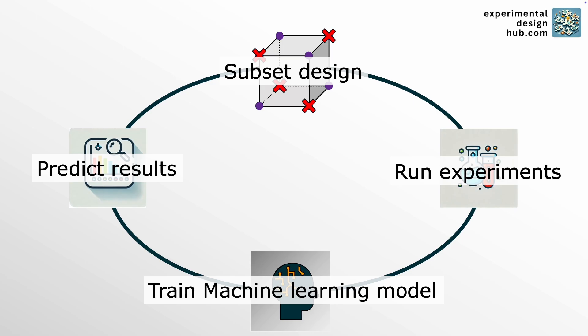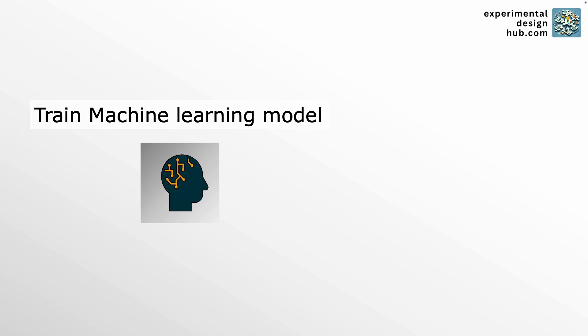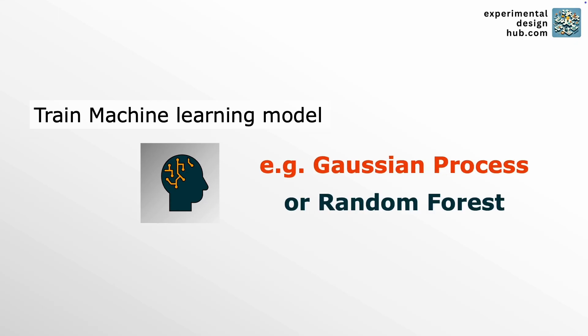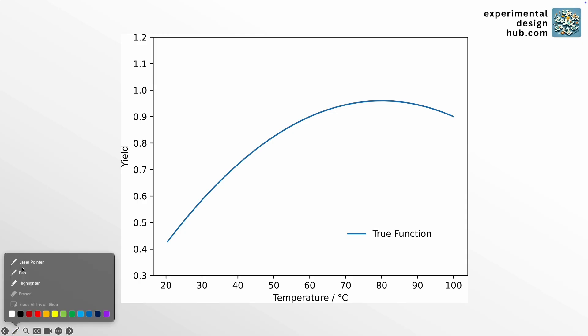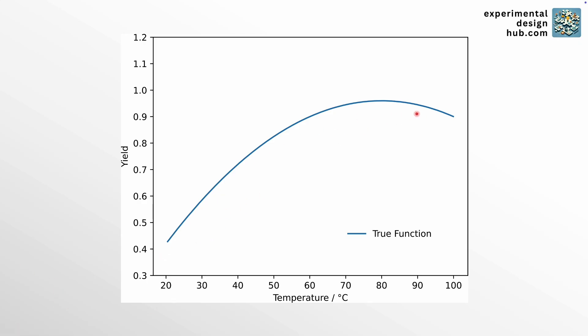Based on that training, the model will suggest which experiments to conduct next depending on whatever your goal is. Very importantly, you cannot choose just any machine learning model — you need one that is also able to predict its own uncertainty. We'll see in a second why this is important. I created a theoretical experiment where the yield of a chemical reaction is a function of temperature. The blue line represents the ground truth, and we are trying to find the maximum yield through experiments. It's a simple example — in a real-world scenario the design would be more complex with more factors and levels.